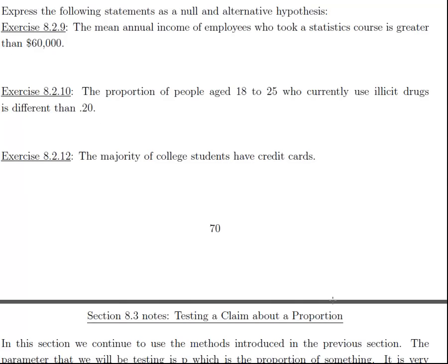The next couple exercises, we're just stating the null and alternative. There's two things to watch out for. We want to look for keywords like mean, greater than, proportion. Those are all keywords that we would use to see if we would use either the mean or proportion in our null, and then also the sign of the alternative.